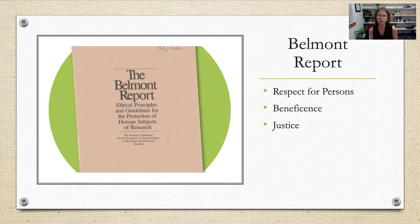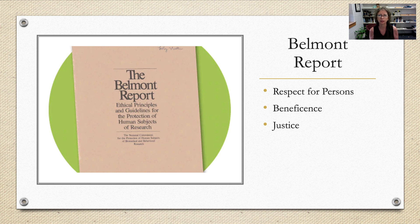Going back to the Belmont Report, the Belmont principles cover three areas: respect for persons, beneficence, and justice. I want you to use the CITI Certification for Social and Behavioral Research course to familiarize yourself with these ethical practices expected for IRB approvals and for a deeper understanding of the Belmont Report principles. But we'll go over them in short here.